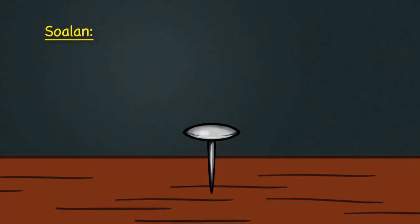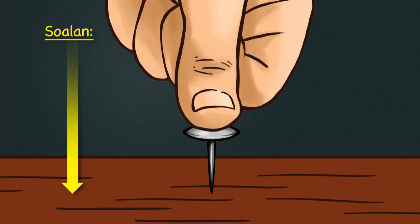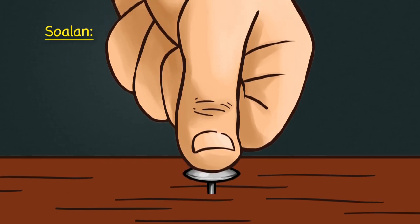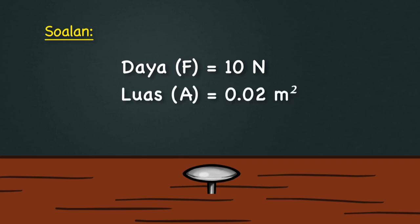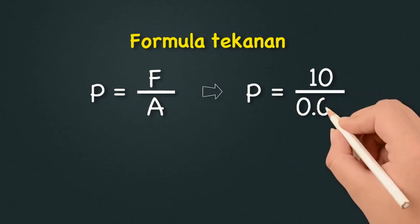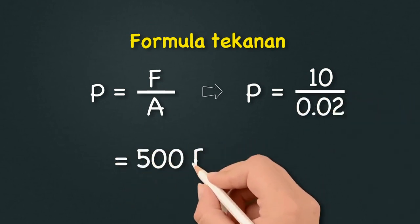Untuk memahami lebih lanjut tentang konsep tekanan, kita akan cuba contoh soalan berikut. Seorang pelajar menggunakan ibu jarinya untuk menekan paku tekan. Daya yang dikenakan adalah 10 Newton. Jika luas permukaan kepala paku tersebut ialah 0.02 meter persegi, kira tekanan yang dikenakan ke atas bahagian kepala paku tersebut. Kenal pasti maklumat: Daya F = 10 Newton, Luas A = 0.02 meter persegi. Masukkan ke dalam formula: P = F/A = 10 / 0.02. Jawapannya ialah 500 Paskal.